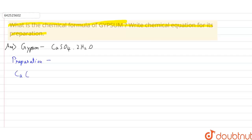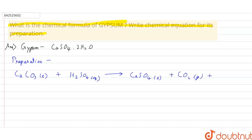The first equation is: CaCO₃ (solid) + dilute sulfuric acid (H₂SO₄, aqueous) → CaSO₄ (solid) + CO₂ (gas) + H₂O (liquid).